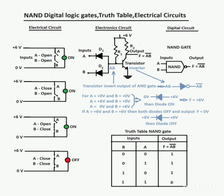Electronic circuit given for NAND gate: here two diodes, two resistors, and one transistor are used. The diodes and resistors act as NAND gate and the transistor acts as inverter, so the total circuit acts as NAND gate.